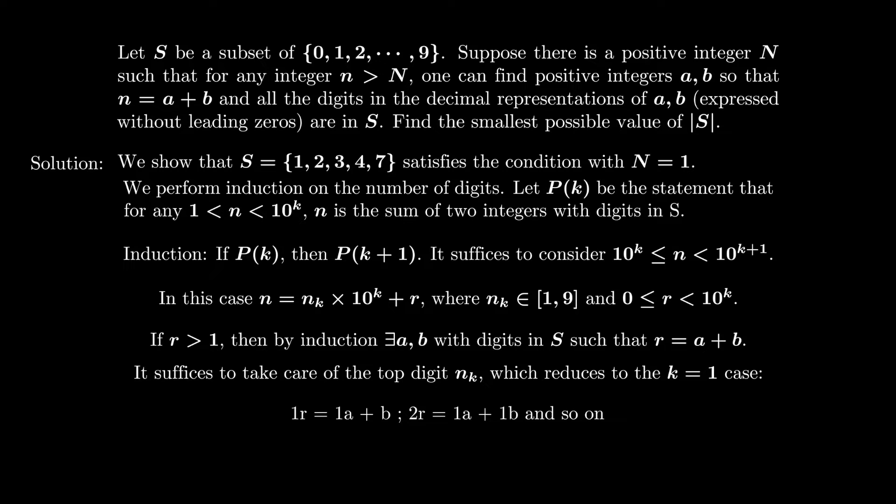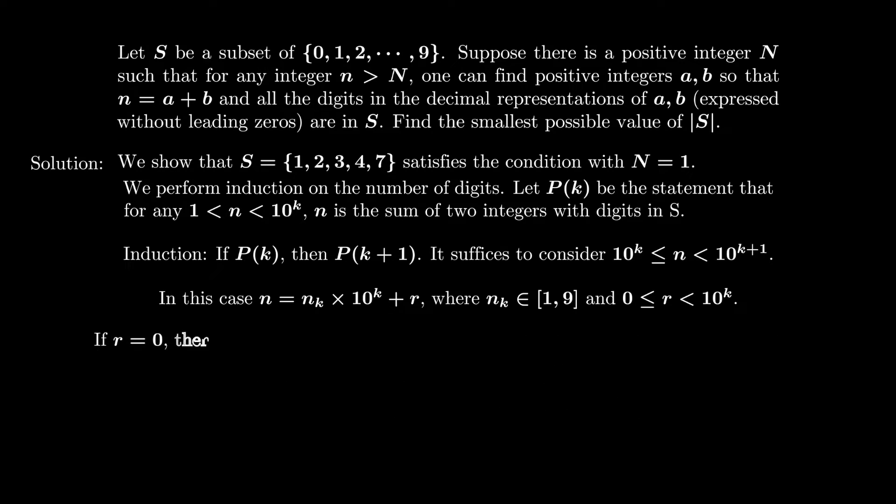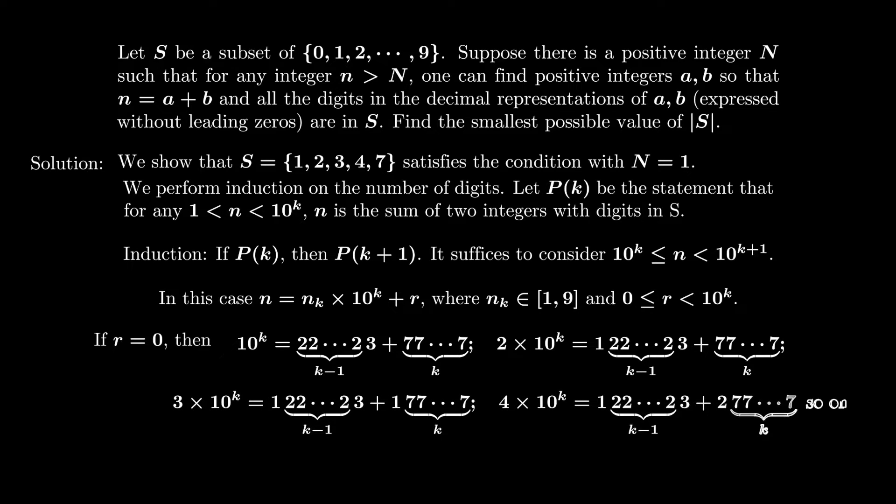So this kills most of the cases and there are only two remaining possibilities: either r equals to 0 or r equals to 1. If r is 0, then n is a multiple of 10^k. In this case, it suffices to note that 10^k is the sum of 22...223 plus 77...777. Then we can handle the top digit as previously.